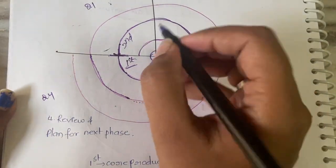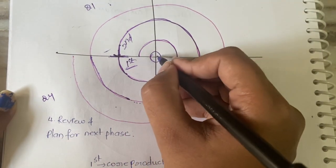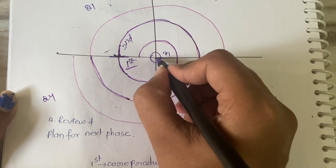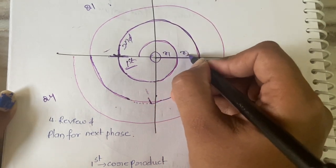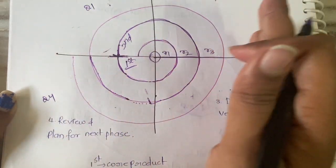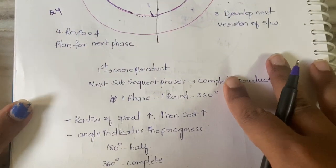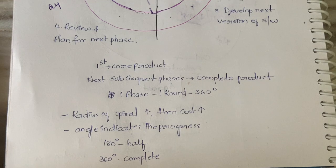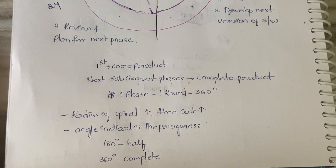As the radius of the spiral increases, cost also will increase. The radius of the first iteration is r1, second iteration is r2, third iteration is r3. As the radius keeps increasing, cost will increase, time will increase, complexity will increase - everything increases as the radius of the spiral keeps increasing. And the angle will indicate the progress.